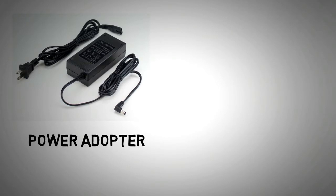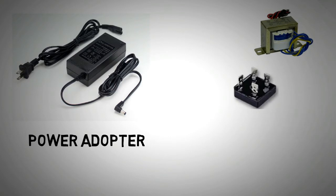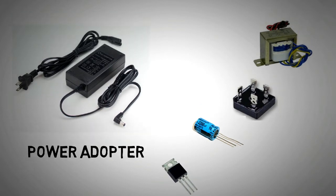In a power supply or an adapter we normally have four electronic components. First we have a step down transformer. Second we have a full bridge rectifier. Third we have a capacitor and fourth we have a voltage regulator. Let's look at what each of them does individually.